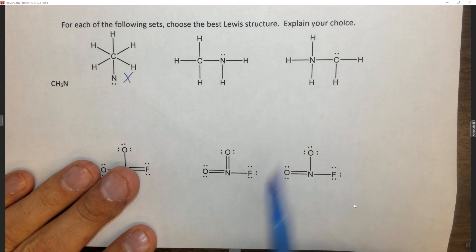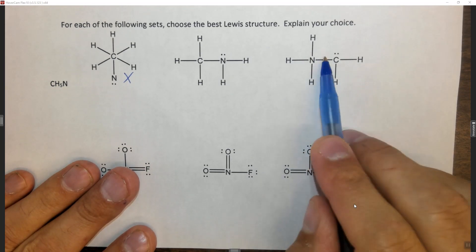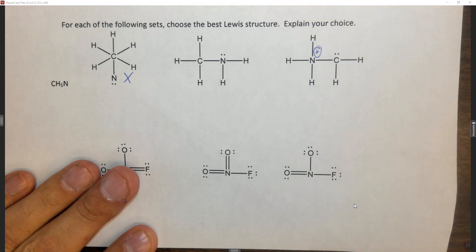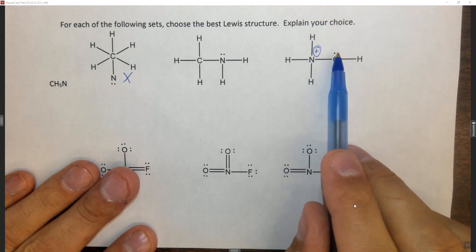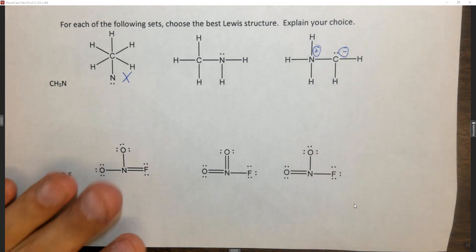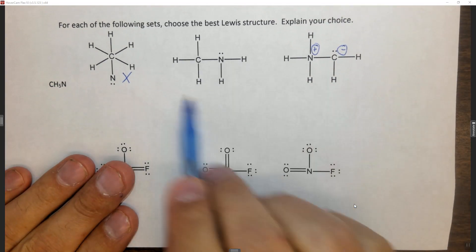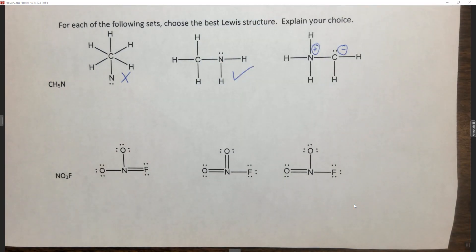Let's look at this case. Nitrogen wants five and has one, two, three, four — nitrogen is missing an electron, making it positively charged. Carbon wants four and has one, two, three, four, five — it has an extra electron, making it negatively charged. This is the best Lewis structure because all of the formal charges are zero.